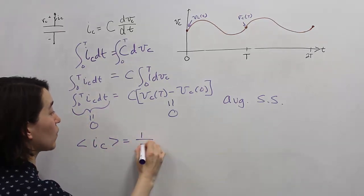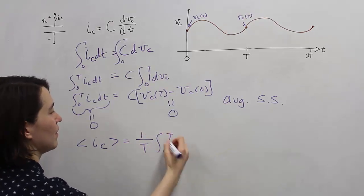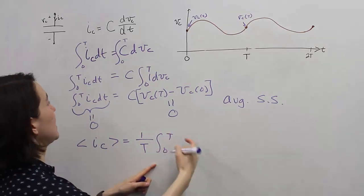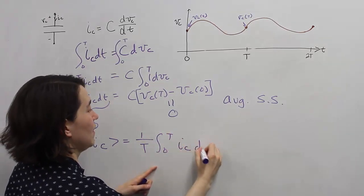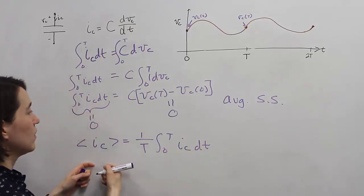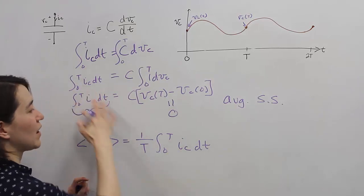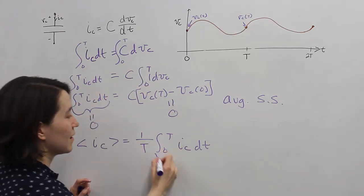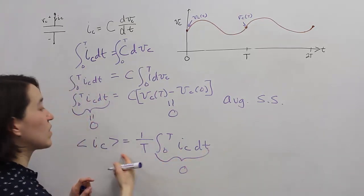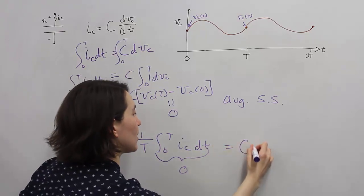This is the same value, and we know if we're in this state, if we're average steady state, this value must be 0. That's the same as this. This must be 0, which means that the average value must be 0.